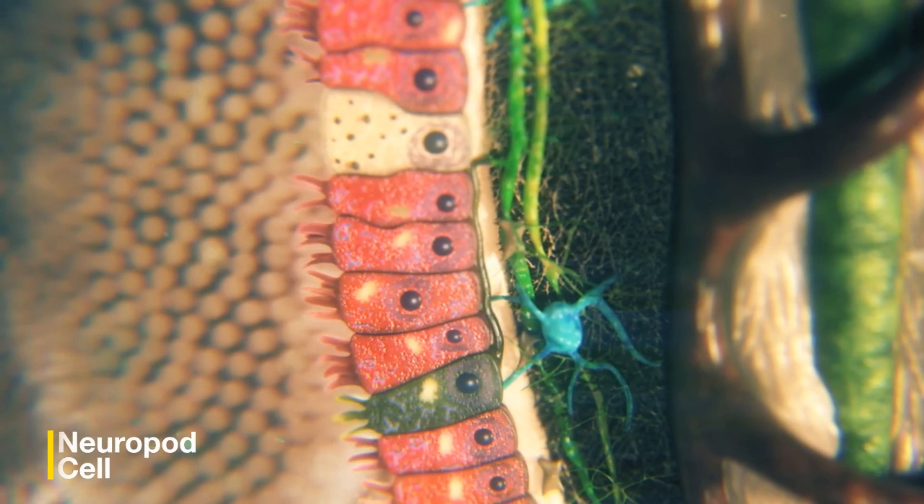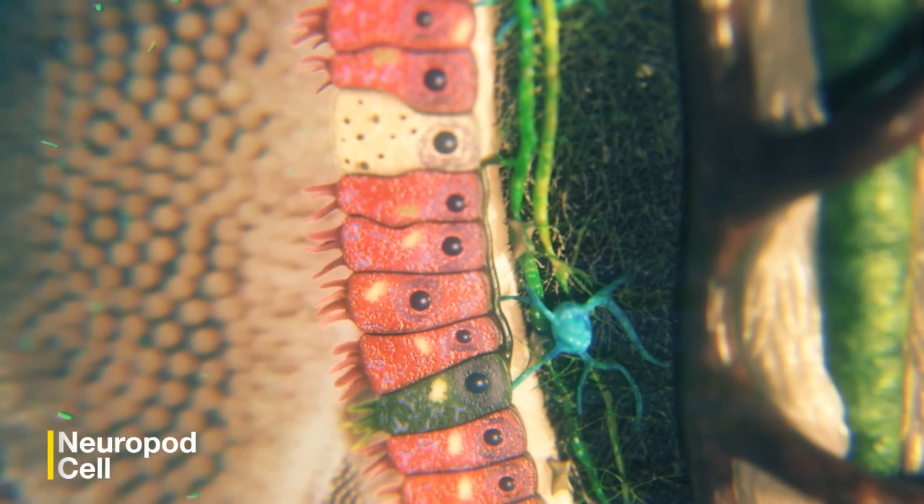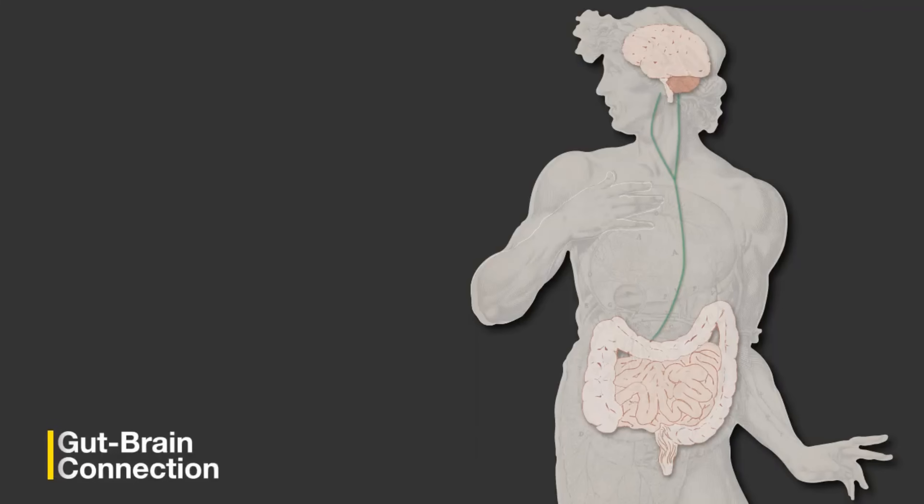Vagal neurons carry the sensory information to the brain stem, linking the signals generated inside the small intestine to the brain.